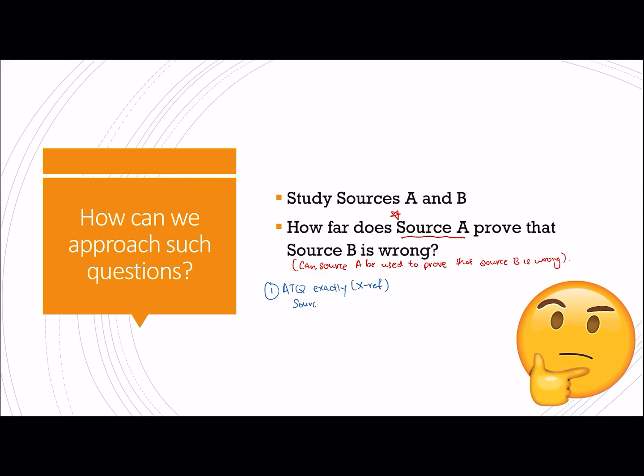So source A, for example, proves that source B is wrong, because you have to give me a reason for why source A is able to prove that source B is wrong. Because source A contradicts source B, and then you will go on to do your normal cross referencing. Source A states that blah blah blah, which shows blah blah blah, and then however, source B states that blah blah blah, and therefore shows that blah blah blah.